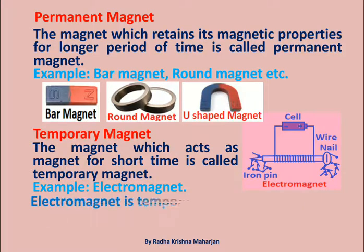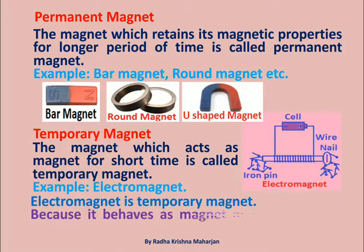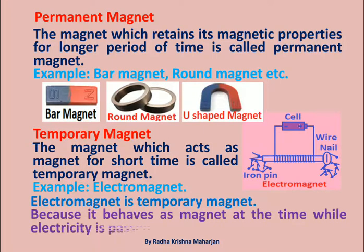An Electromagnet is a Temporary Magnet because it behaves as a magnet only at the time while electricity is passed through it.